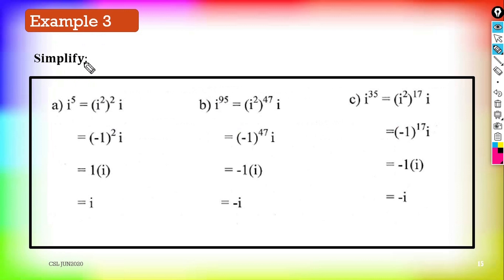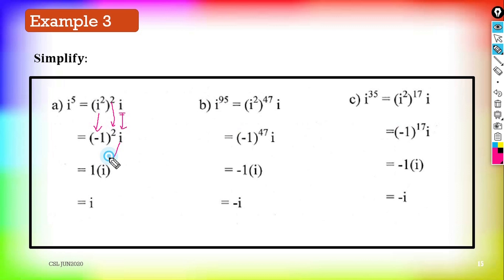Example 3: simplify (a) 8i^5. We put i² into the bracket: i^4 × i, where 2 × 2 = 4. But the power is 5, so we multiply by one more i. Replace i² with −1: 8(−1)² × i. Since (−1)² is even, it equals positive 1. So 8 × 1 × i = 8i.